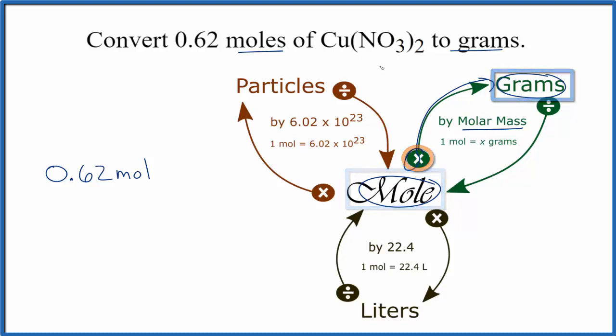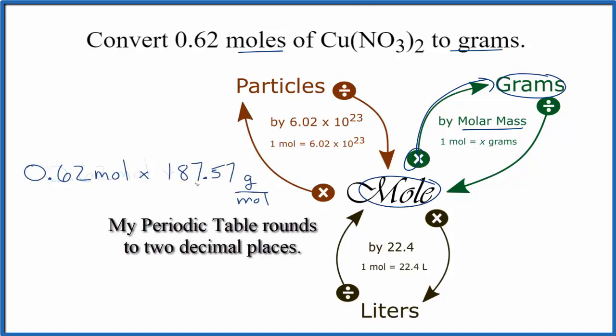For the molar mass, we go to the periodic table and add up the mass of all the elements. If you need help with copper 2 nitrate finding the molar mass, there's a link in the description of this video. So we find the molar mass for copper 2 nitrate, and we get 187.57 grams per mole.